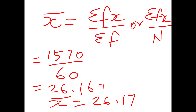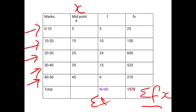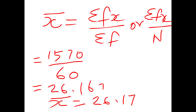Substitute in the formula: x̄ = Σfx / Σf = Σfx / N. Σfx = 1570 and N = 60. So x̄ = 1570 / 60 = 26.167, which rounds off to 26.17. Therefore the arithmetic mean is 26.17.